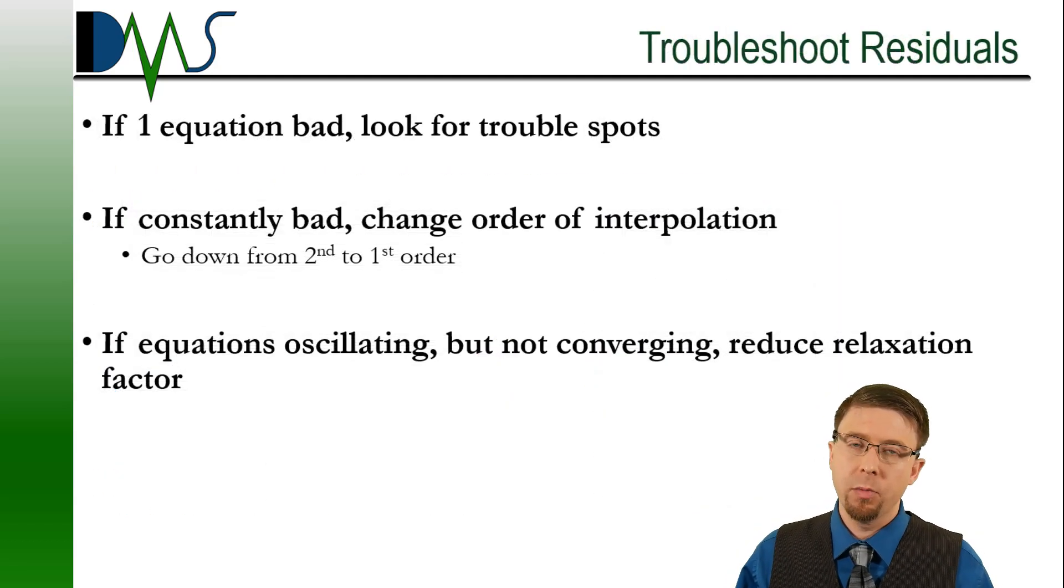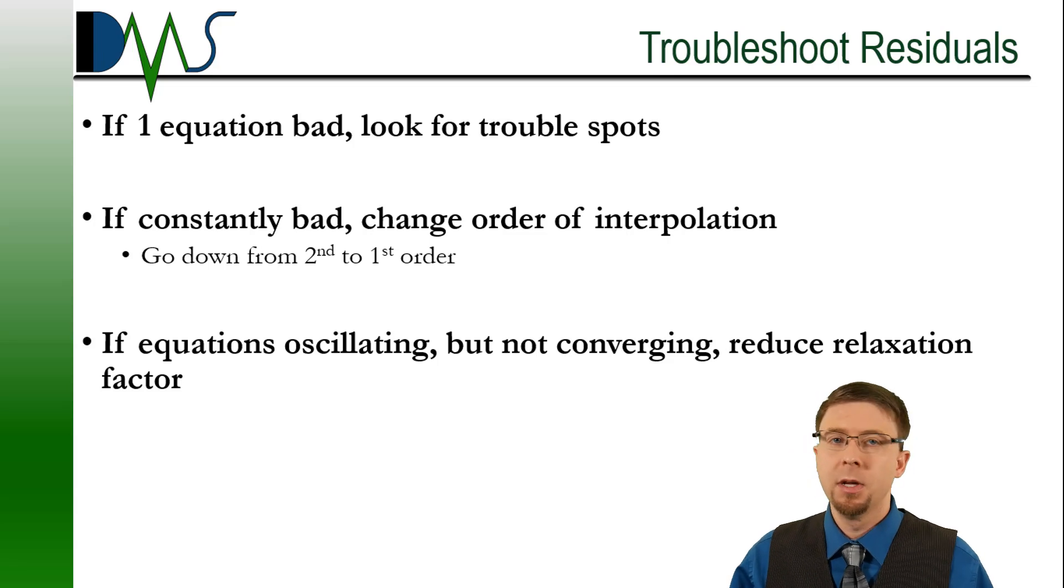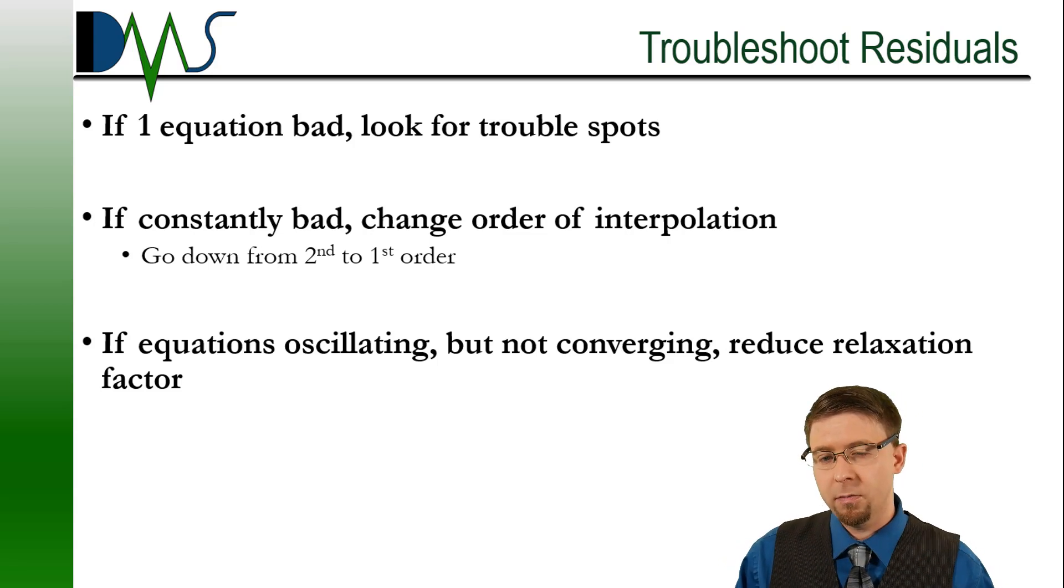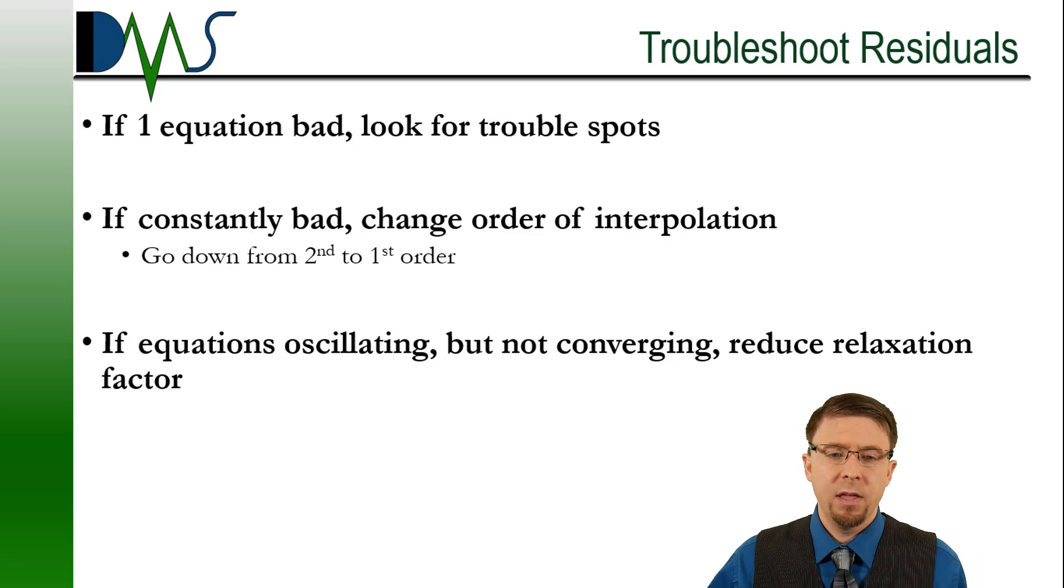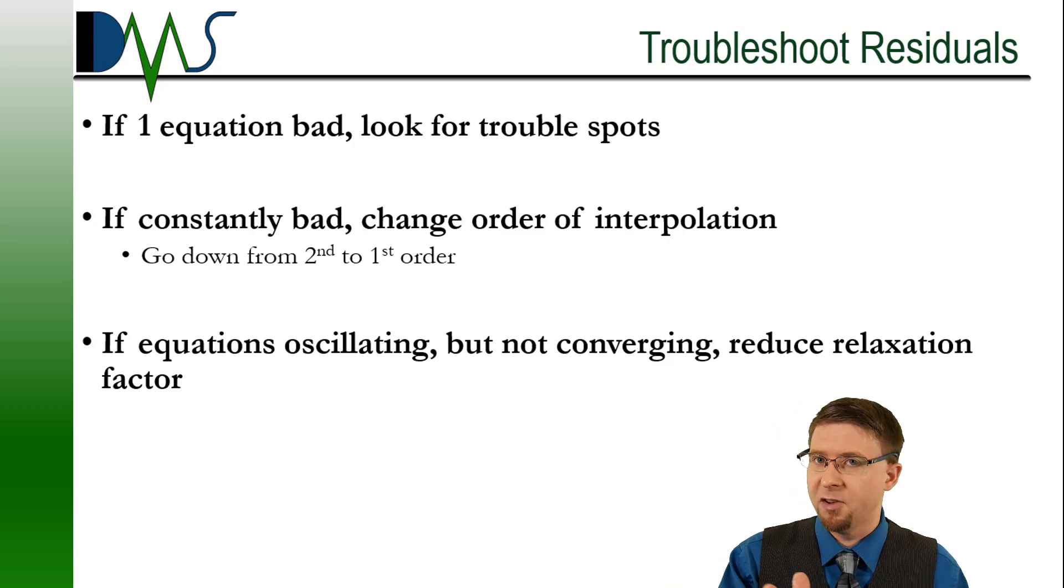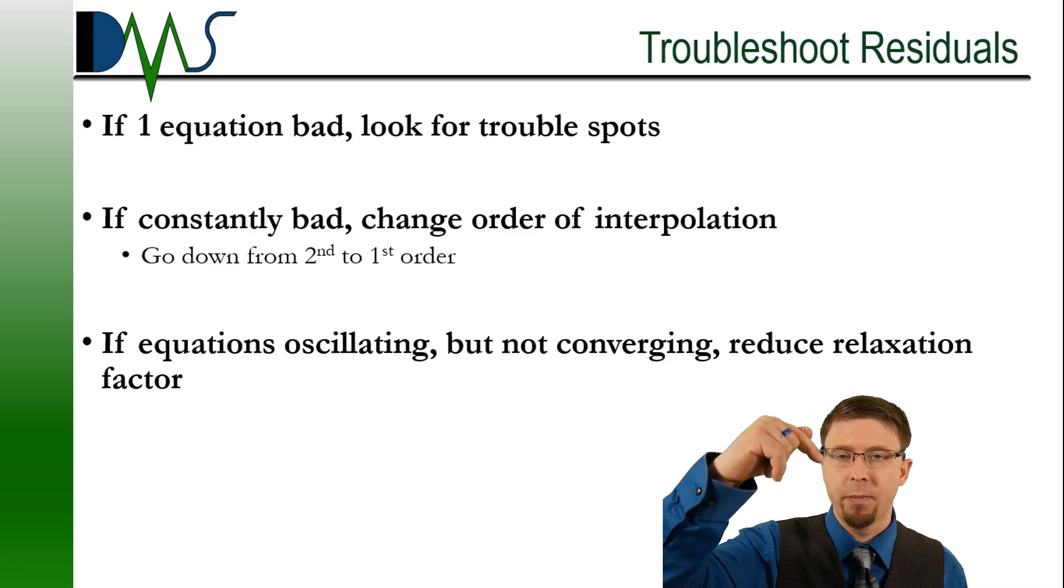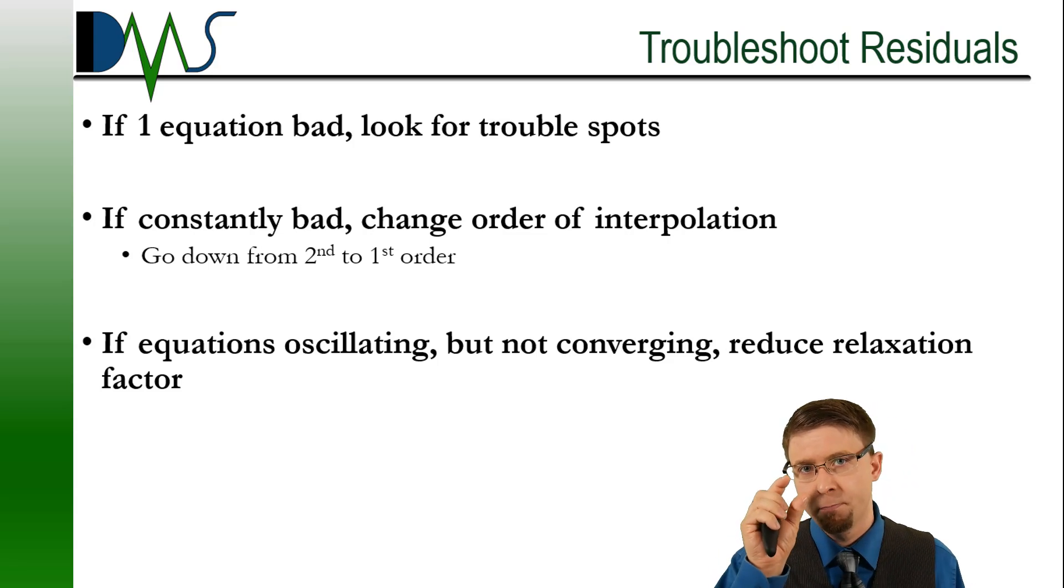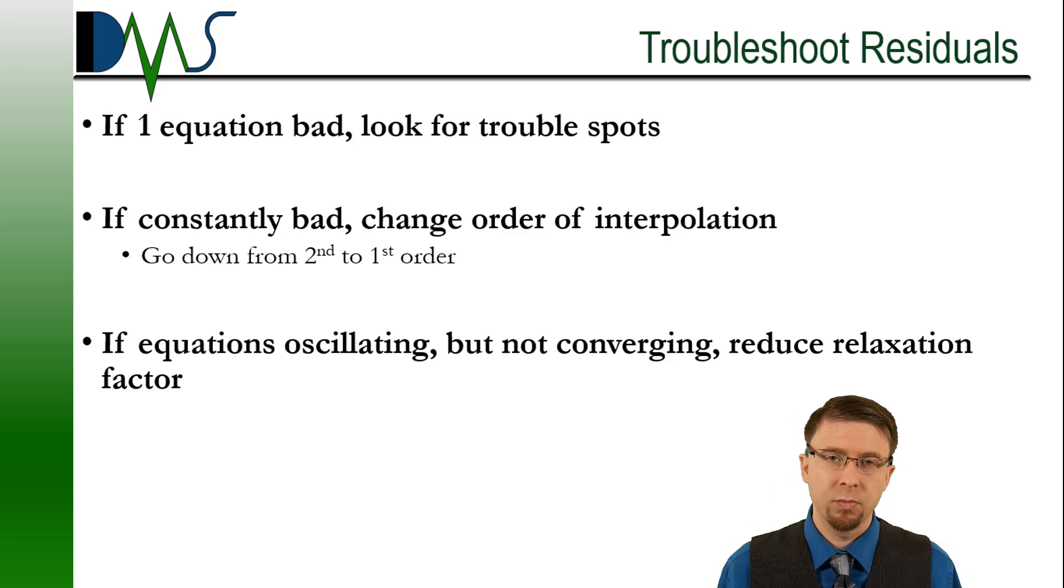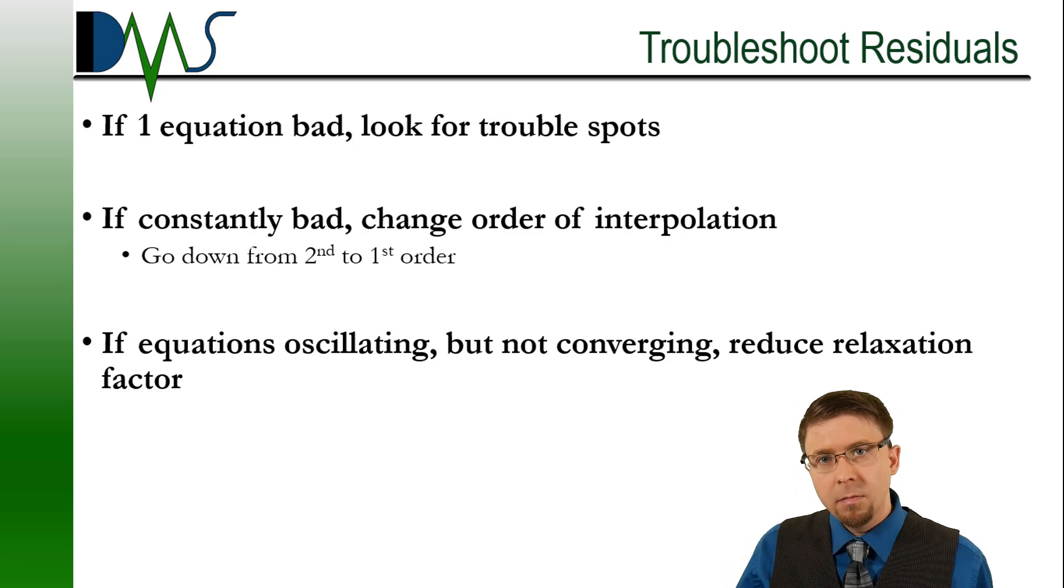Of course, not all of your residual plots are going to look this nice. You're going to run into troubles. So let's talk about some issues and ways that you can troubleshoot residuals. First, if most of your residuals are behaving but just one equation is giving you trouble, look for trouble spots in your mesh. This is going to appear in your residuals plot where it initially spikes up in your residuals and the simulation crashes, that one equation. Or possibly you have initially a stable simulation and then that one equation suddenly starts going up and spikes. And then your simulation crashes. That's how it will appear. In those cases, you're going to look for trouble spots in your mesh. It's going to be appearing as one bad area in your simulation. You want to look for poor mesh cells, poor mesh quality, poor mesh resolution, something like that. There's a single trouble spot somewhere that you have to deal with.